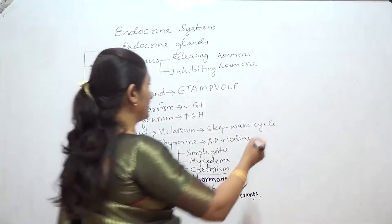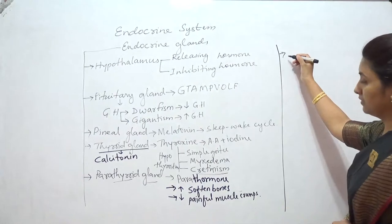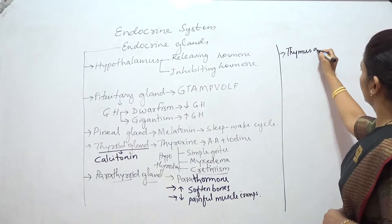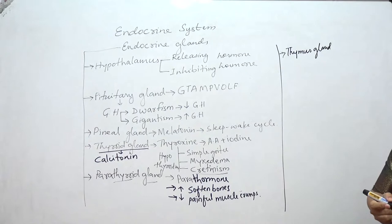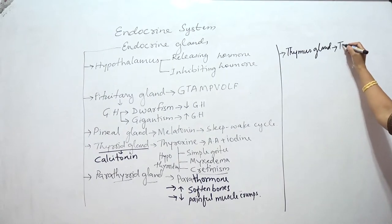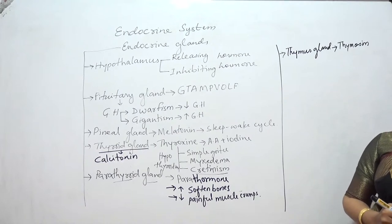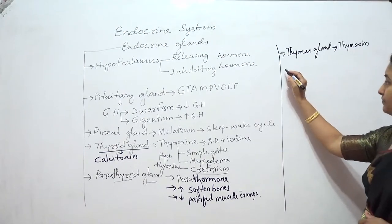Then we came across the thymus gland, located below the neck and above the chest region. It secretes the hormone called thymosin, which helps in the development of the immune system in children. As the child attains maturity, the thymus gland gets converted to a patch of fatty tissue.